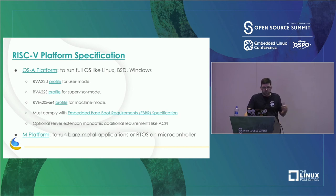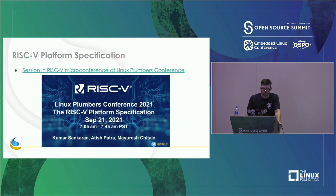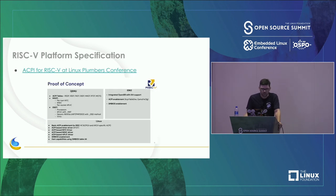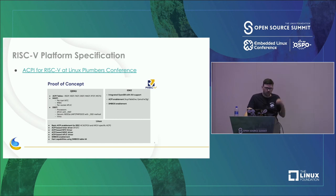The server extension of the platform specification mandates ACPI, which is expected for servers. There's also an M-platform for microcontrollers, but it's not well-defined yet. There was a platform specification session at Plumbers last week. There is now an actual proof of concept of ACPI on RISC-V — in that future scenario with high-end RISC-V processors running on servers, ACPI will be part of that.